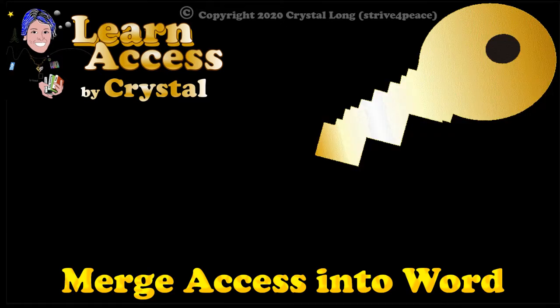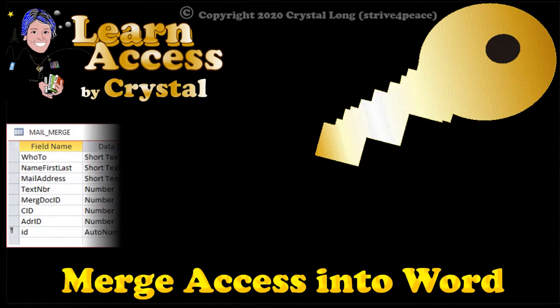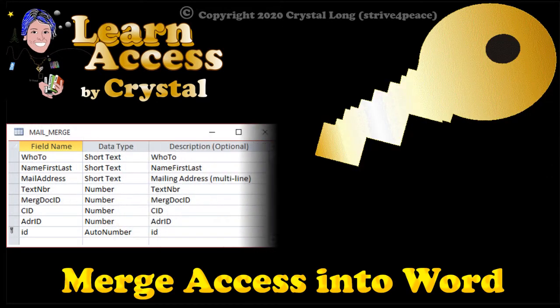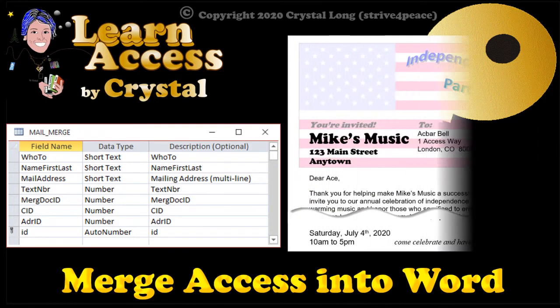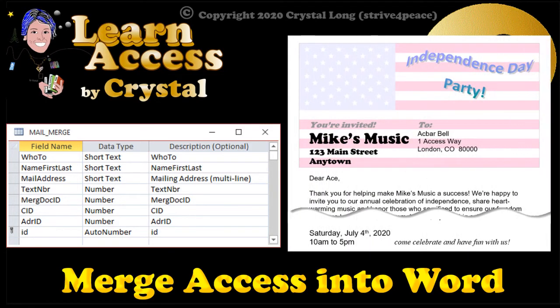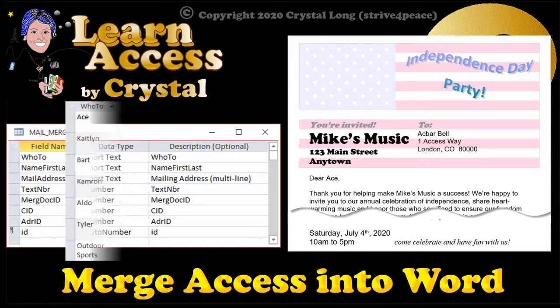One of the beautiful things about Access is its integration with other Microsoft products like Excel, Word, and PowerPoint. You can make a document with images and formatting just the way you want with Microsoft Word, and then merge data from Access.